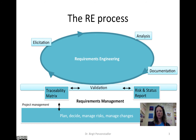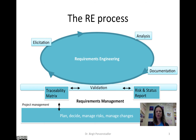Then we move into documentation, where we think about the right way to write down requirements — in models, UML diagrams, or whichever format is easy for your main stakeholders, like your clients. The validation phase is where we go back to the customer and ask, is this what you really wanted? At the bottom of the slide we see tools for requirements management, such as the traceability matrix, which tracks how requirements relate to each other, and a risk and status report for managing risks and changes. Project management and requirements engineering are interlinked via requirements management.